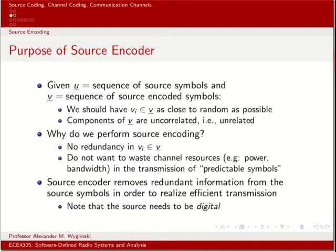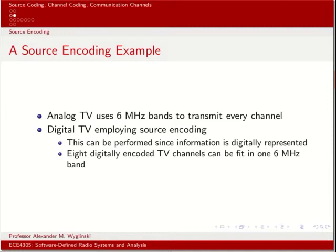The information fed into the source encoder has to be digital — ones and zeros. Here's an example of the impact of source encoding: analog TV channels, before they were deactivated in 2009 in the United States, used 6 MHz of bandwidth to represent a single channel. Nowadays with digital TV, because of digital encoding including MPEG-2 and source coding, you can get between 6 and 8 digitally encoded TV channels fitting in the same 6 MHz bandwidth. That is the power of source encoding — when we remove the redundancy, the digital transmission doesn't need a lot of bandwidth.